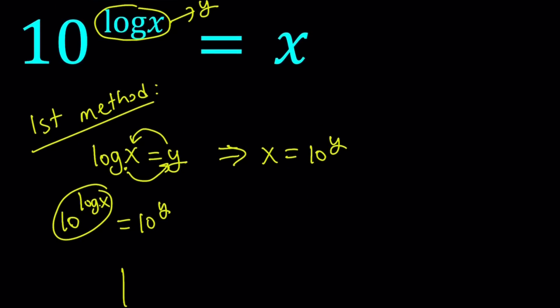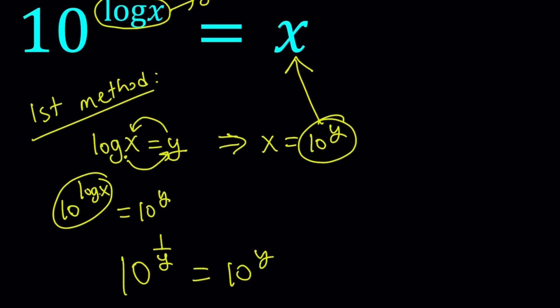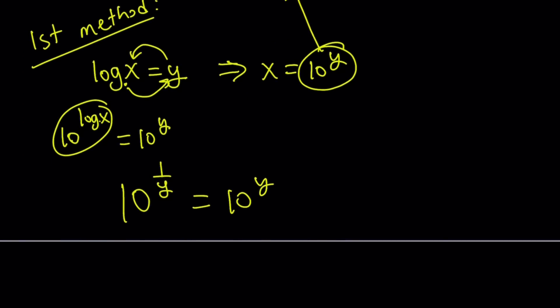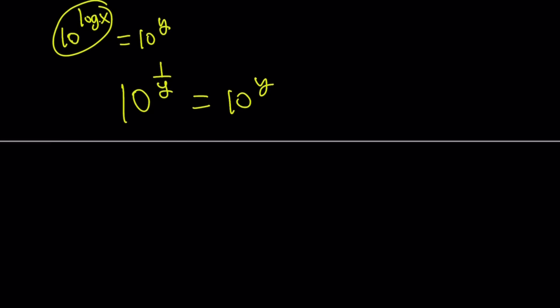We're going to have 10 to the power 1 over y on the left hand side and on the right hand side x will be replaced with 10 to the power y. That's why substitution is really cool because it opens a lot of interesting doors. We have the same base so it makes sense to equate the exponents. 1 over y equals y and then from here we get y squared equals 1 and that gives us two real solutions, y equals 1 and y equals negative 1.